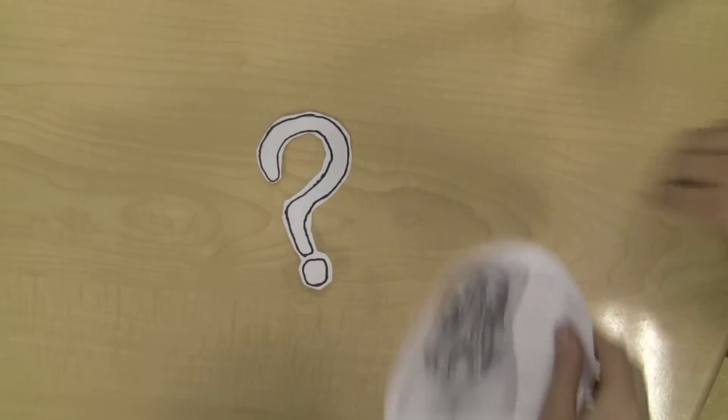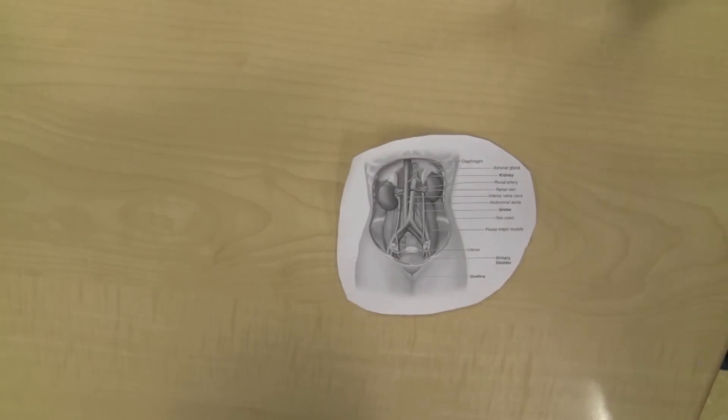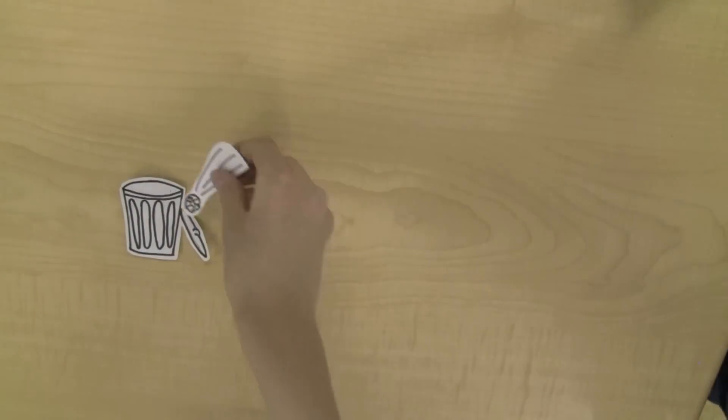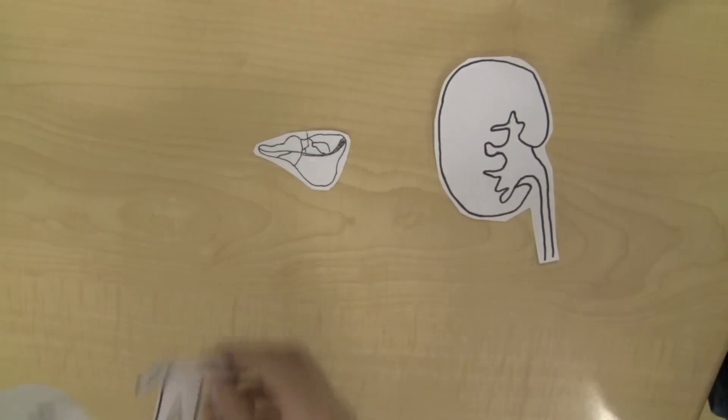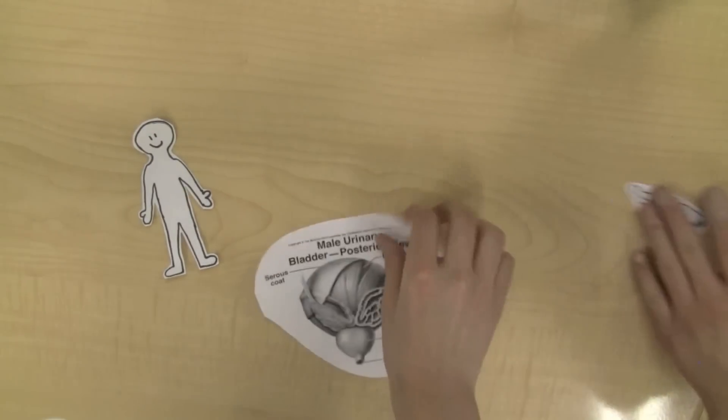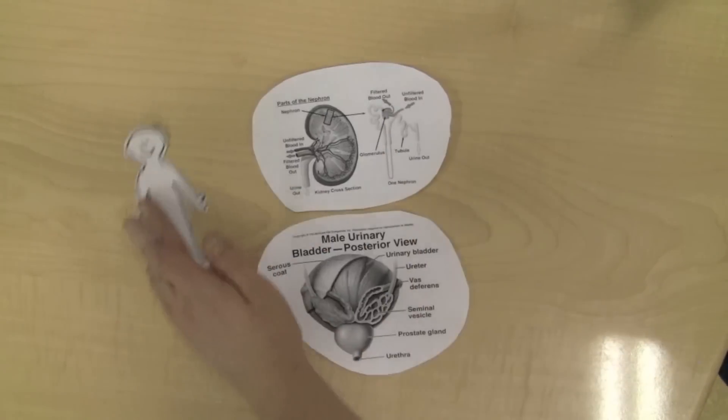What is the Excretory System? The Excretory System is a system in our bodies that removes waste and filters blood. It contains the kidney, liver, skin, bladder, nephrons, and the ureter.